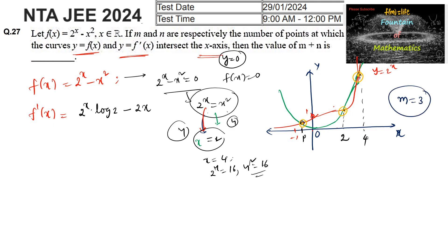Coming to the next part: f'(x) also intersects the x-axis, so we consider f'(x) = 0, giving 2^x · log2 = 2x. Let us see the graph now.